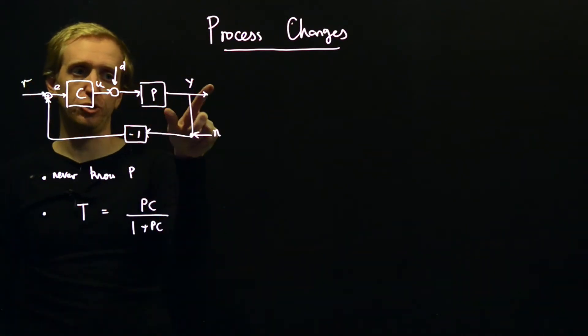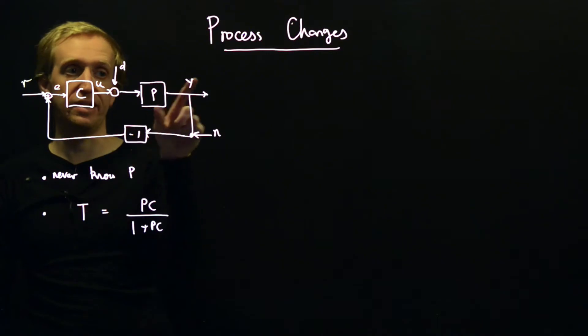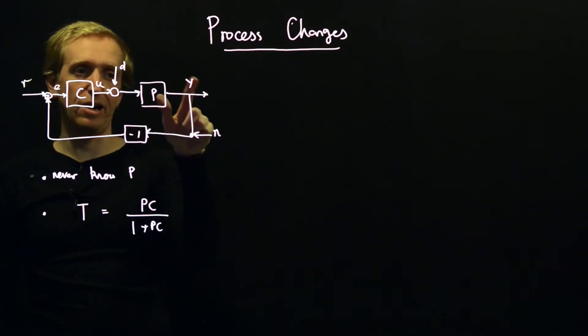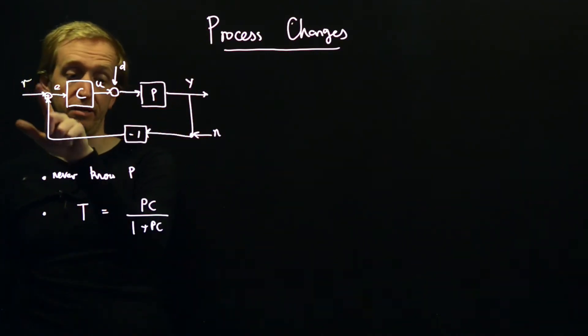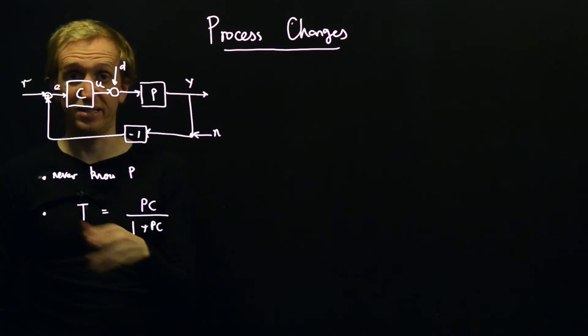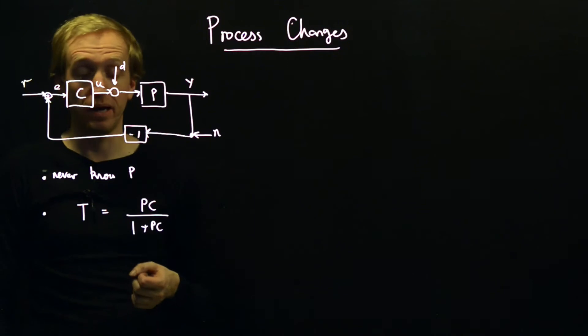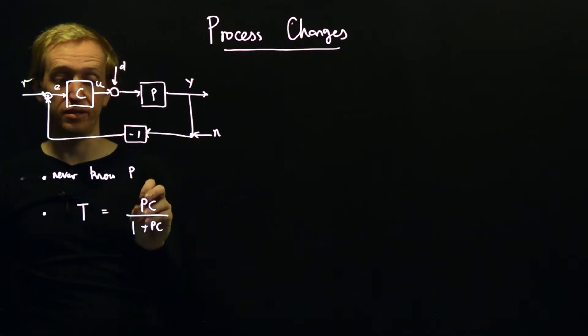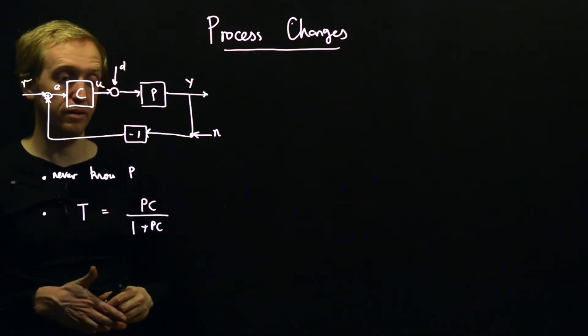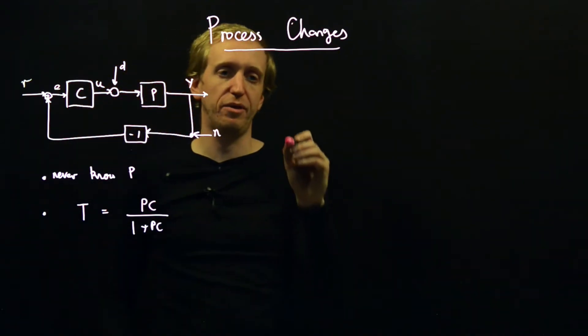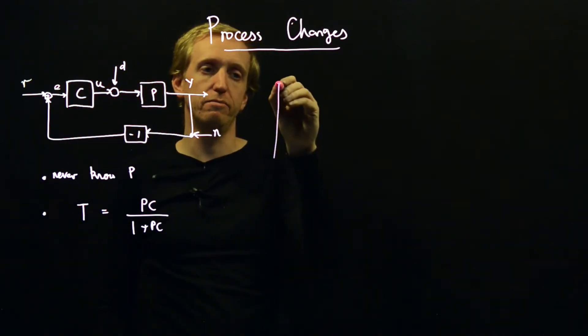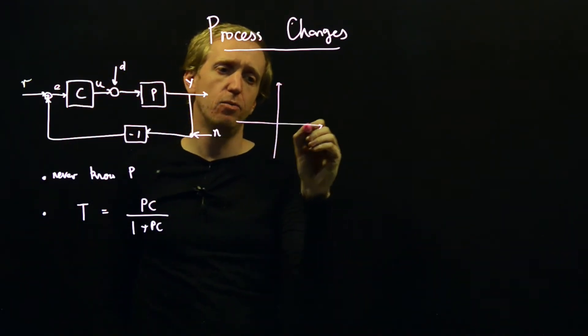But it will help us build some intuition. So we have this transfer function which is roughly reflecting how our desired outputs depend on our desired inputs. And now let's just investigate how robust this is to changes or uncertainty in the process. How could we go about thinking, or how could we start thinking about this?